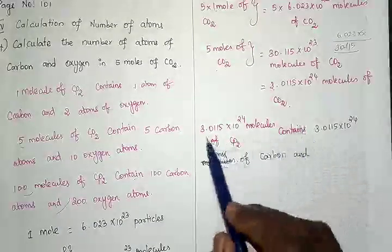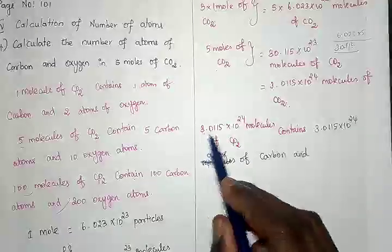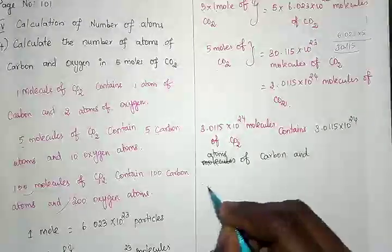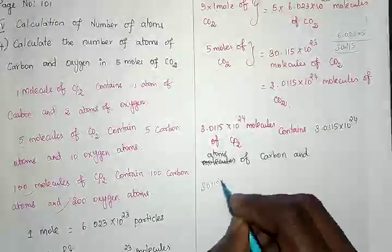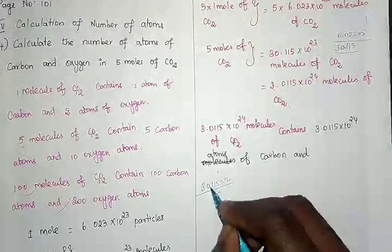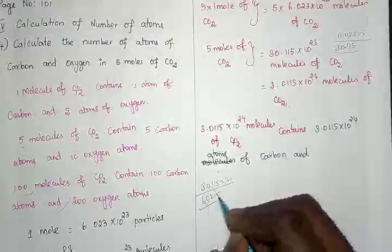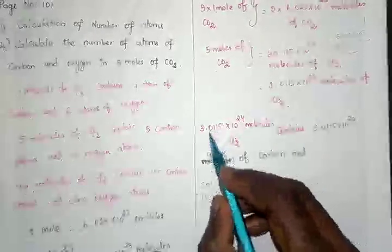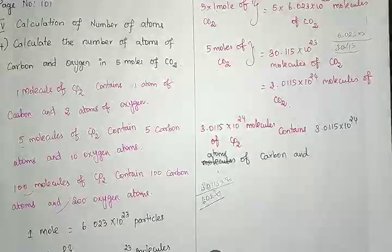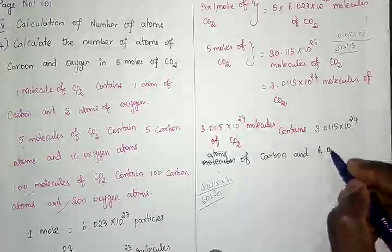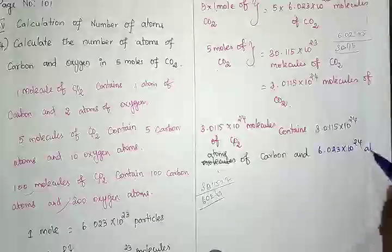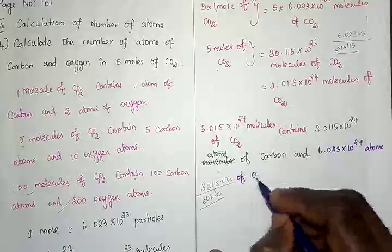For oxygen, we have two atoms per molecule, so multiply 3.0115 × 10²⁴ by two: 3.0115 × 2 = 6.023, and moving four decimal places gives 6.023 × 10²⁴ atoms of oxygen.